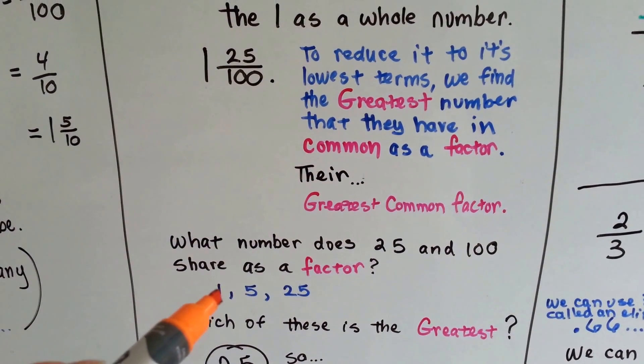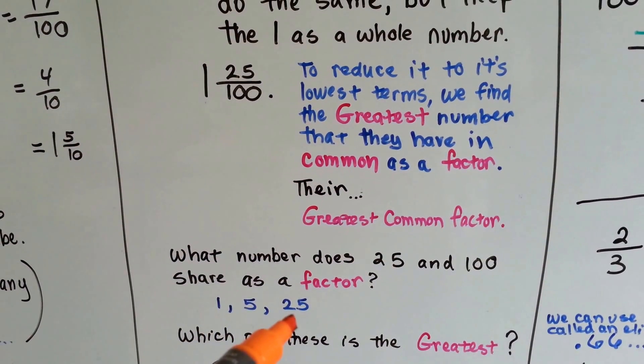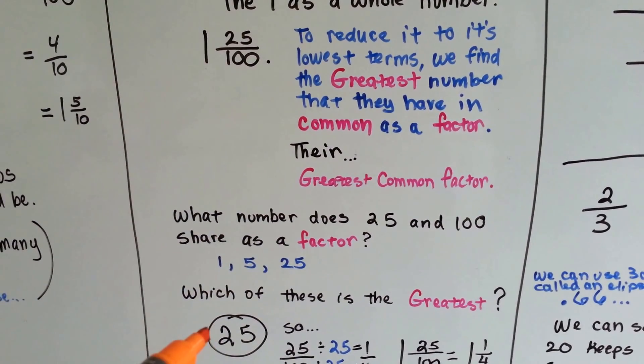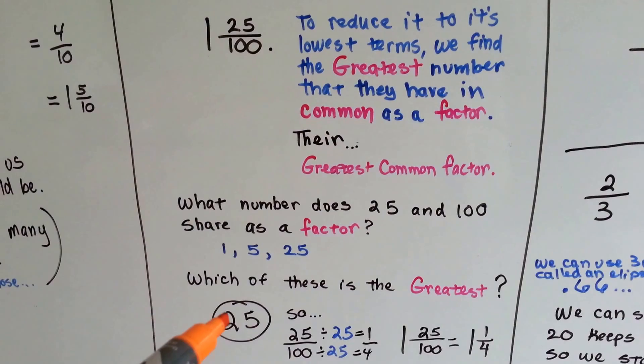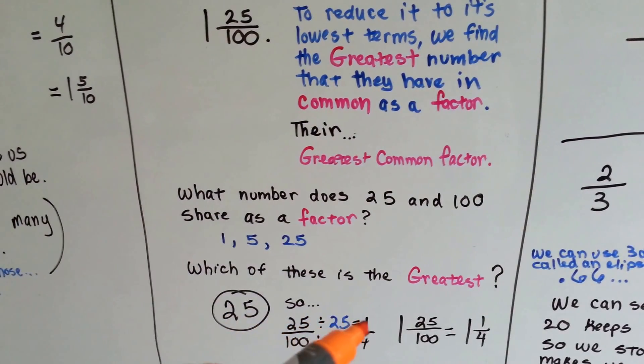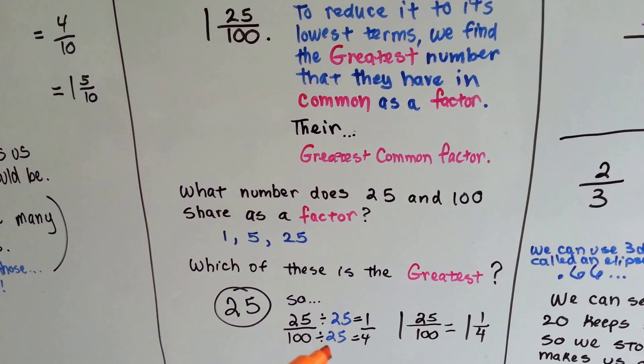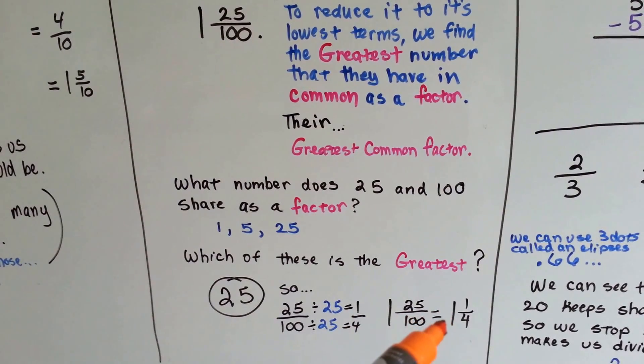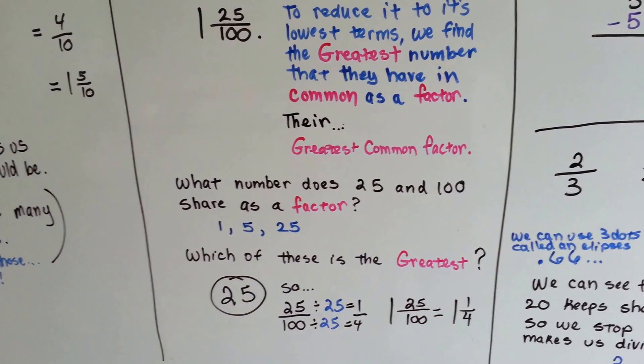Well, they share a one, a five, and a twenty-five as common factors. Which one of these is the greatest? The twenty-five is. So we divide the twenty-five by twenty-five and get one, and we divide the one hundred by twenty-five and get four. So one and twenty-five hundredths, in its lowest terms, is one and one-fourth.